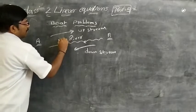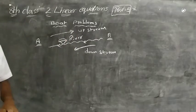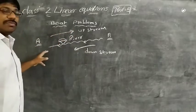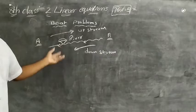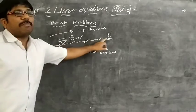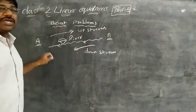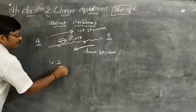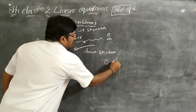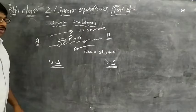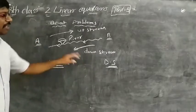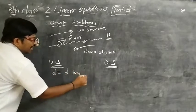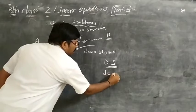If you travel upstream and downstream, what are the changes in speed and time when the distance is common? In both upstream (US) and downstream (DS) directions, the distance does not change — distance is equal to D kilometers in both cases.